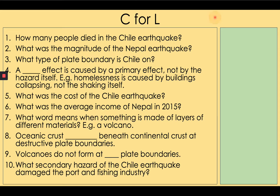Number one: about how many people died in the Chile earthquake? About 525. Two: what was the magnitude of the Nepal earthquake? 7.9. Three: what type of plate boundary is Chile on? Destructive.